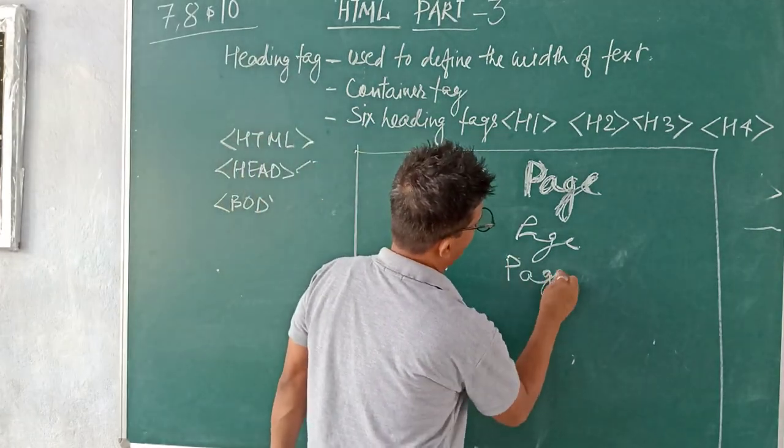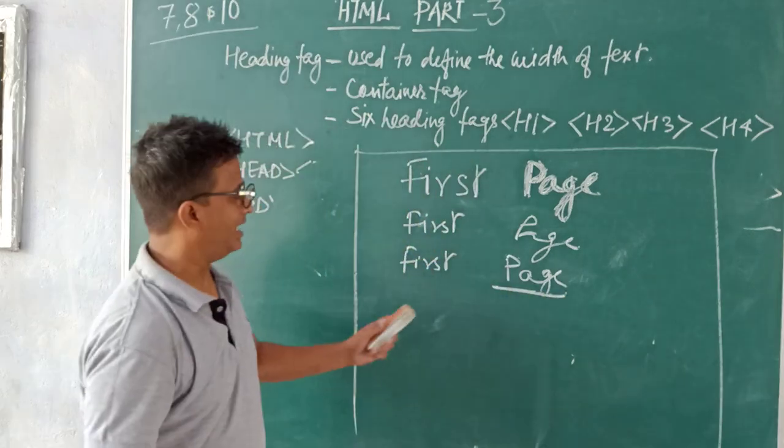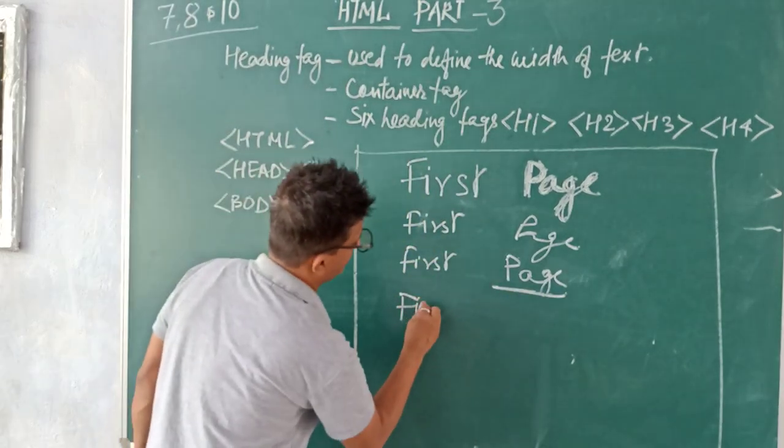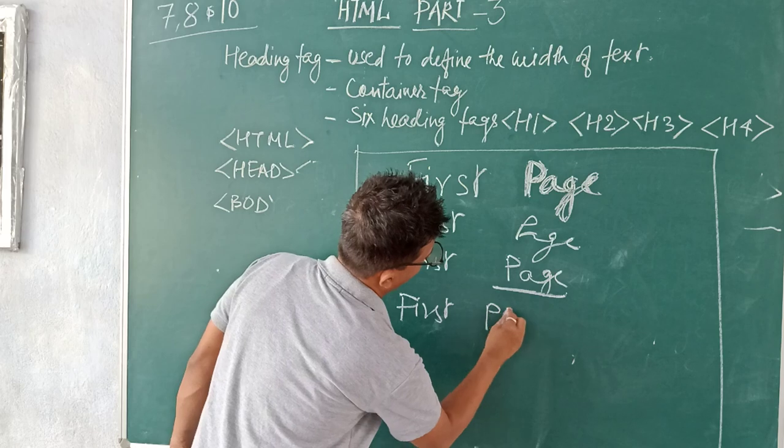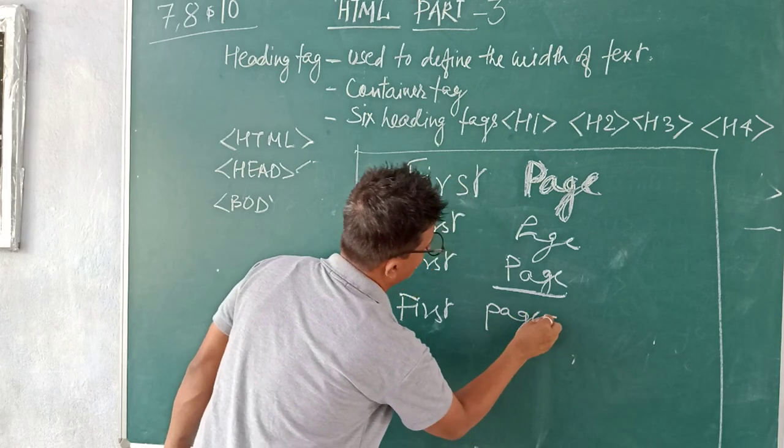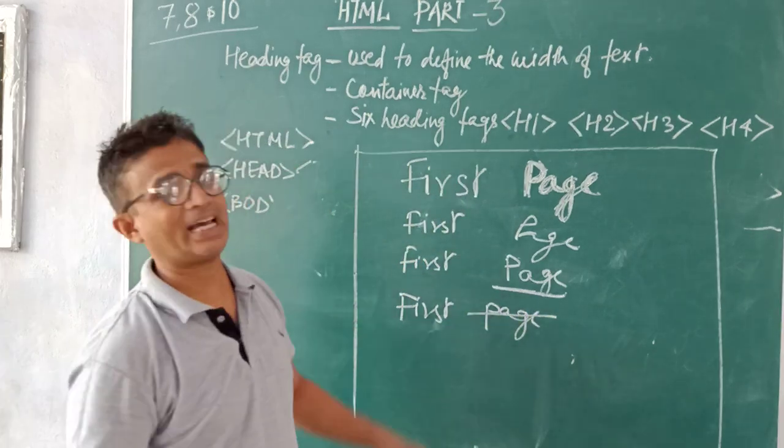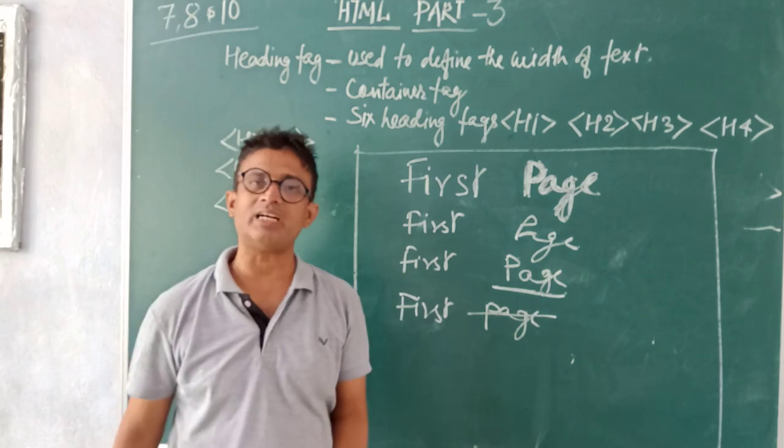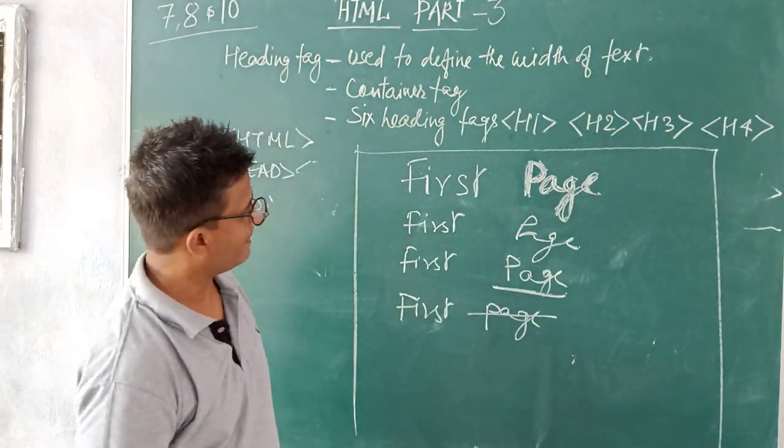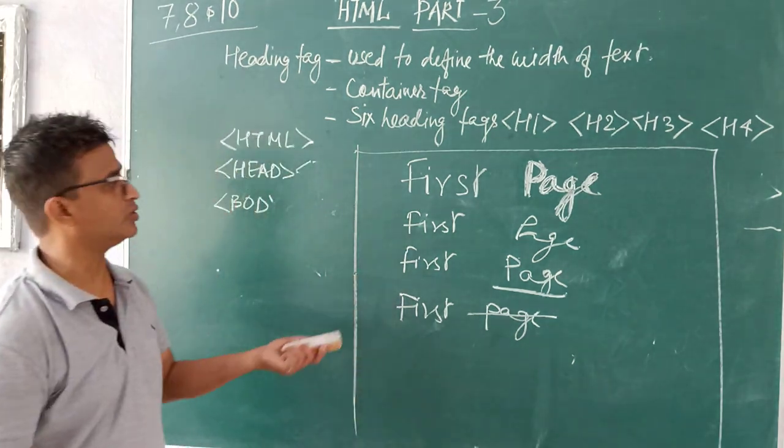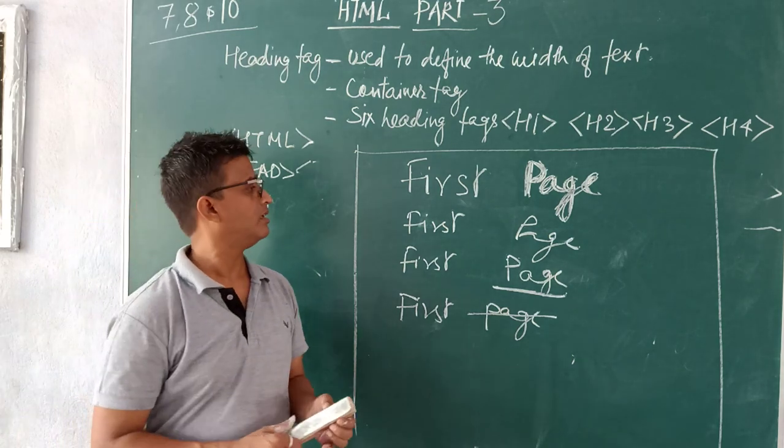First page and it was underline. So we write page underline. And the fourth one, first page. You will find you will see one line striking through the middle of the text. This way you will get. So do the practice at your home.